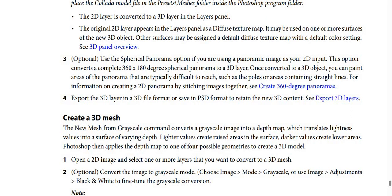Step 3 (optional): You can use the spherical panorama option if you are using a panoramic image as your 2D input. This option converts a complete 360 x 180 degree spherical panorama to a 3D layer. Once converted, you can paint areas of the panorama that are typically difficult to reach, such as the poles or areas containing straight lines. Step 4: Export the 3D layer in a 3D file format or save in PSD format to retain the new 3D content.